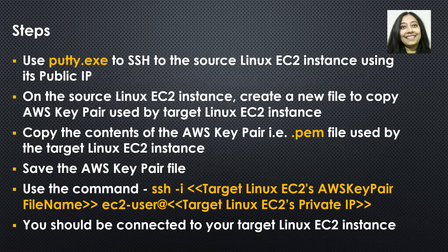So let's review the steps. The first thing we are going to do is use PuTTY.exe to SSH to the source Linux EC2 instance using its public IP. Once we have logged in on this source Linux EC2 instance, we will create a new file and copy our AWS key pair that is being used by our target EC2 instance. We'll be using either nano or vim to create that file and copy the contents of our AWS key pair.